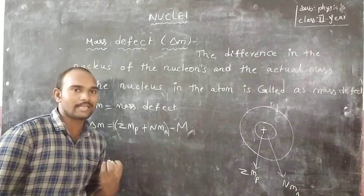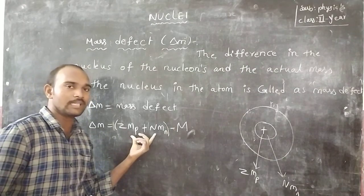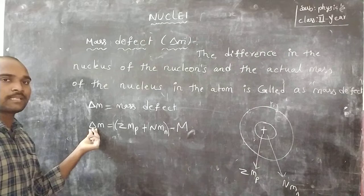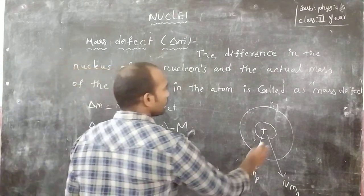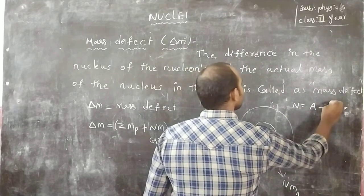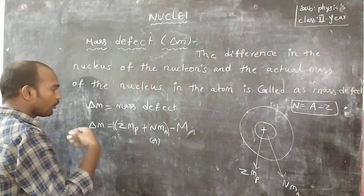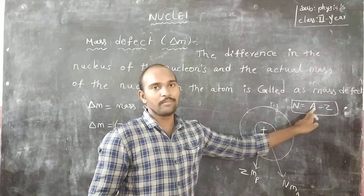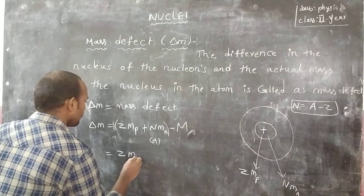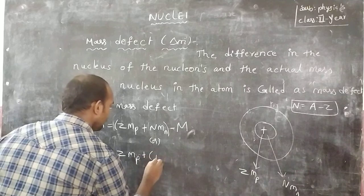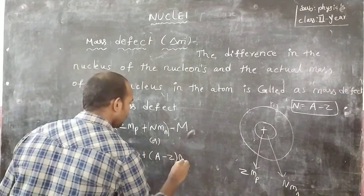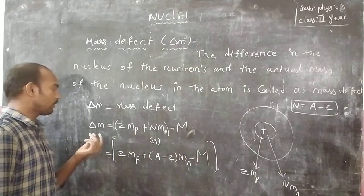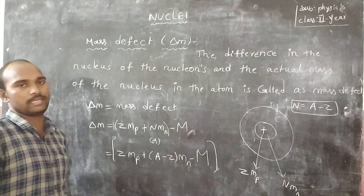Since the neutron number N equals A minus Z, we can also write: delta M equals Z × MP plus (A − Z) × MN minus the actual nuclear mass M. This is the mass defect formula using the mass number A and atomic number Z.